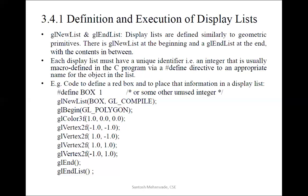Display lists are defined similarly to geometric primitives — there is GL new list at the beginning and GL end list at the end, with the contents in between, same as GL begin and GL end. We always put GL begin, then all the GL vertex and GL color commands, then finally GL end. In the same sense for a display list, we begin with GL new list, put all the contents we want to include, and finally use GL end list, which indicates the end of that particular list. We cannot use any kind of nested list here.